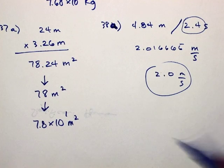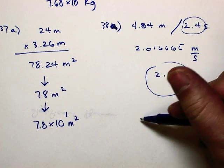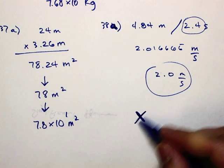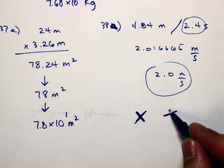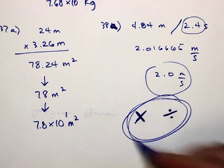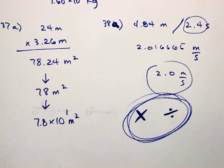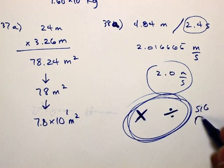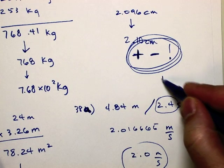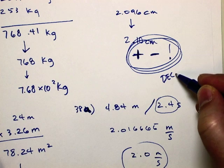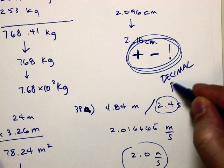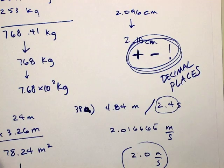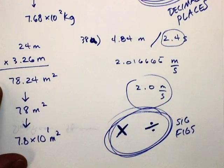Does that make sense? Now, get this cemented into your head. This is for multiplication and division. Only. This relies on sig figs. And this one from up here, this relied on decimal places.